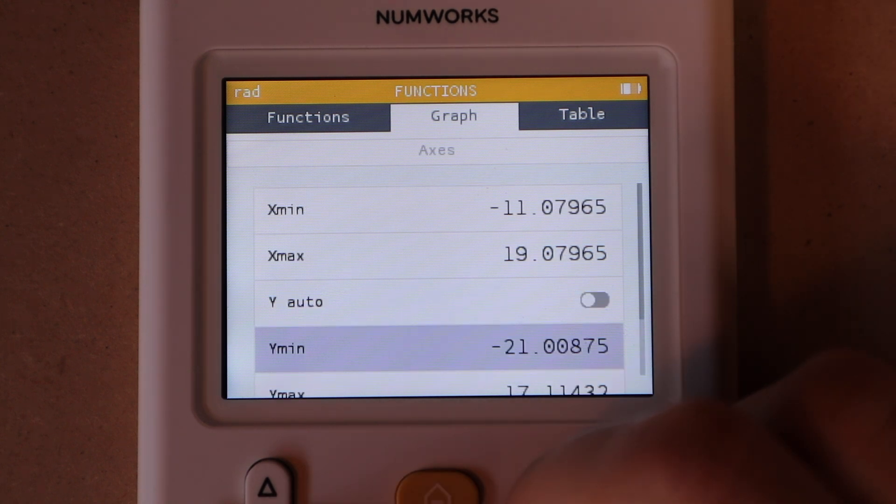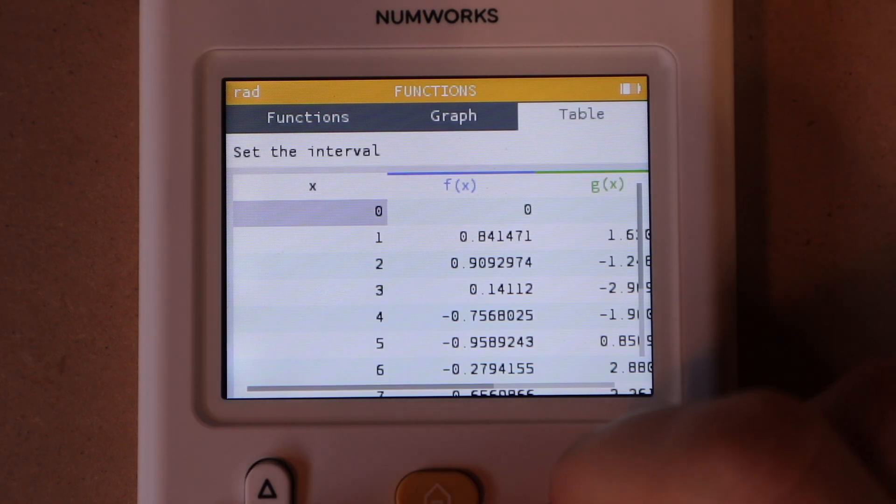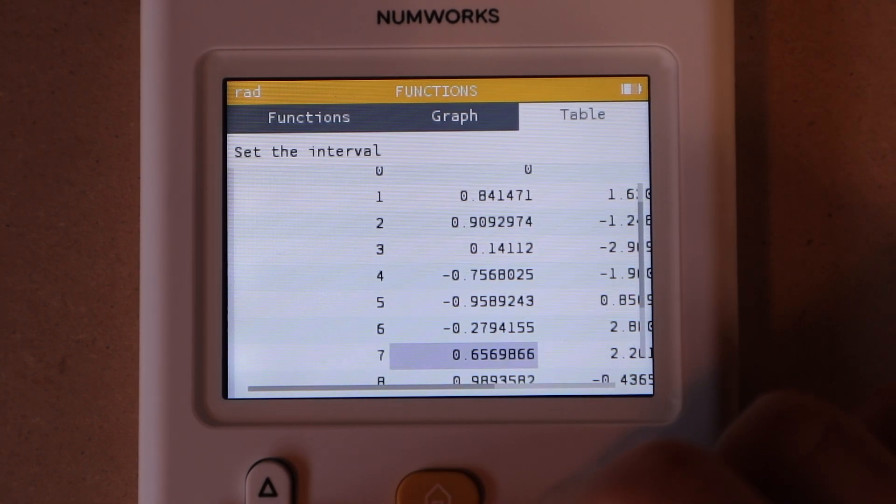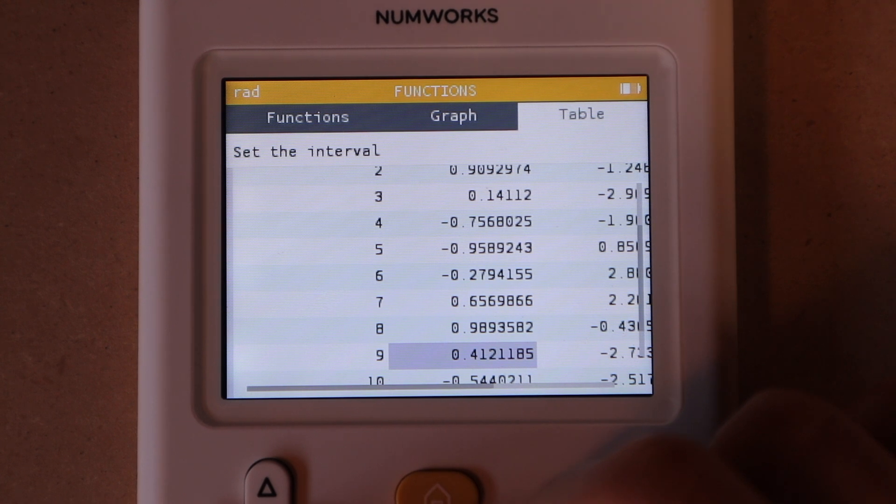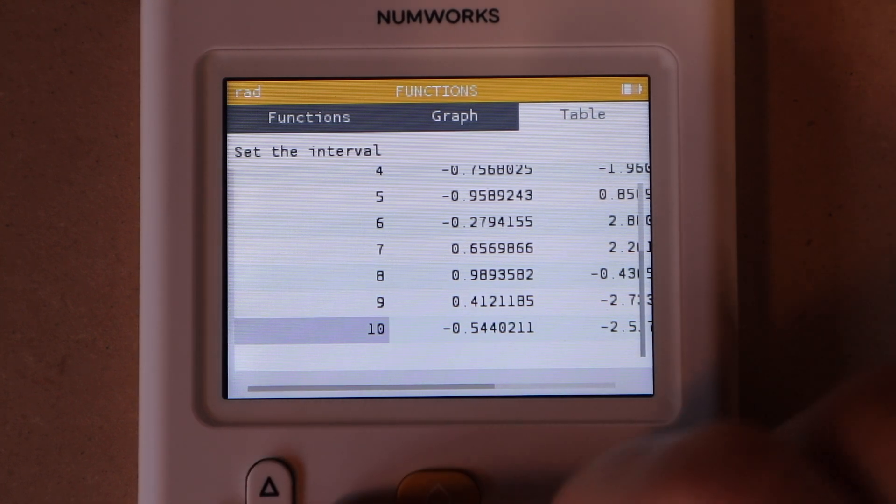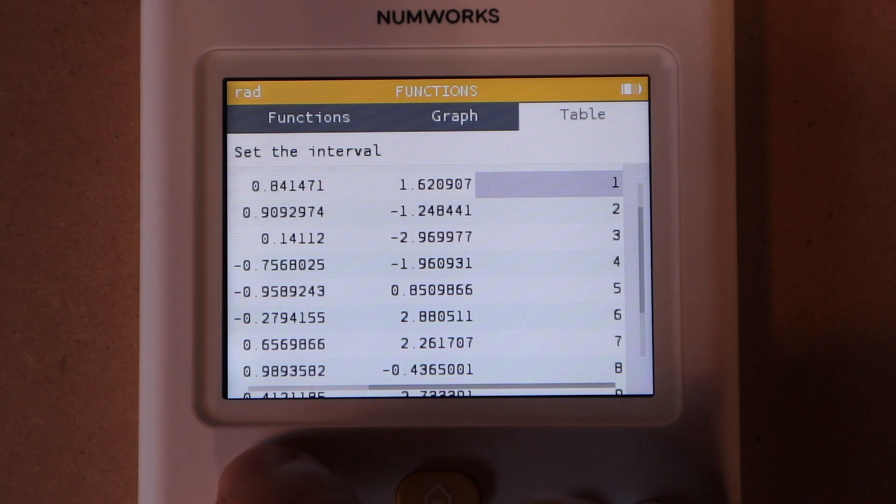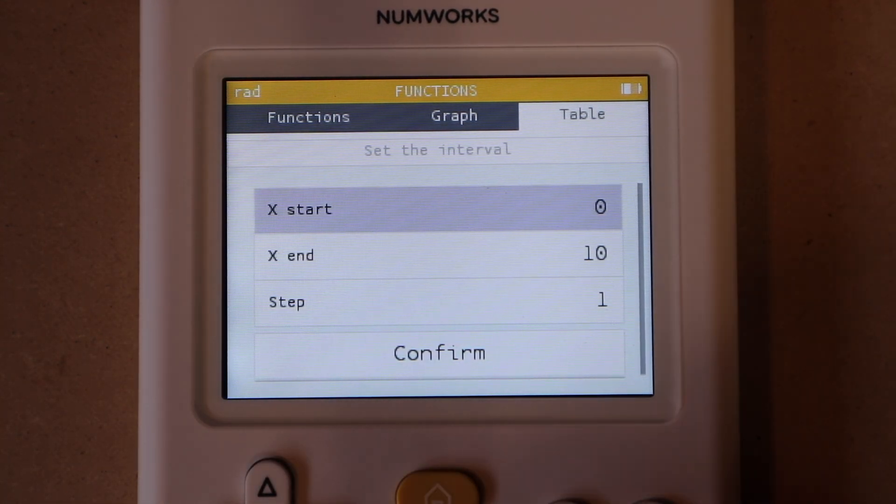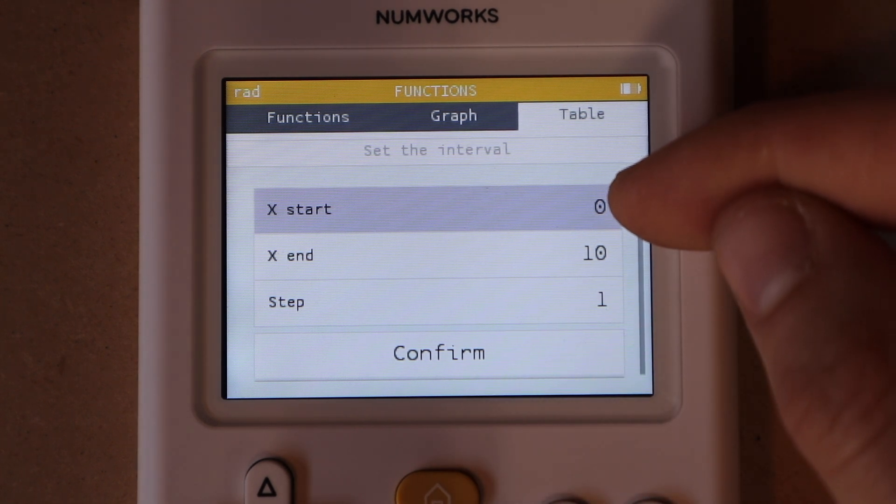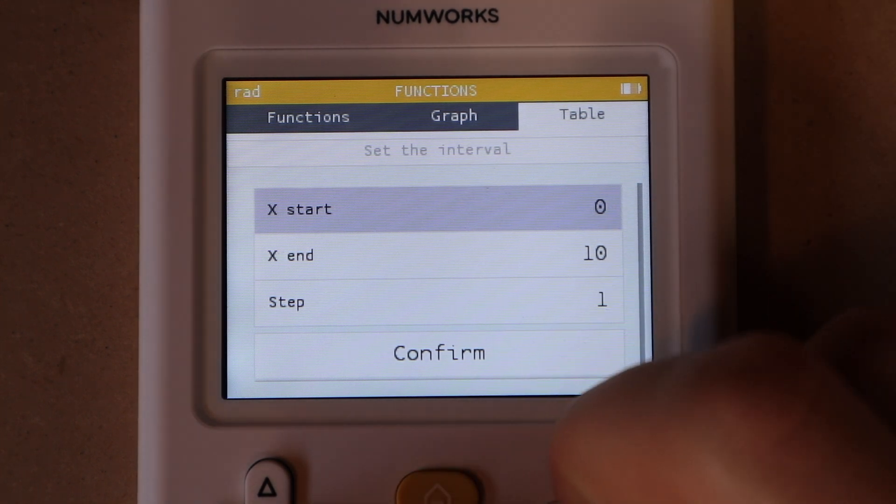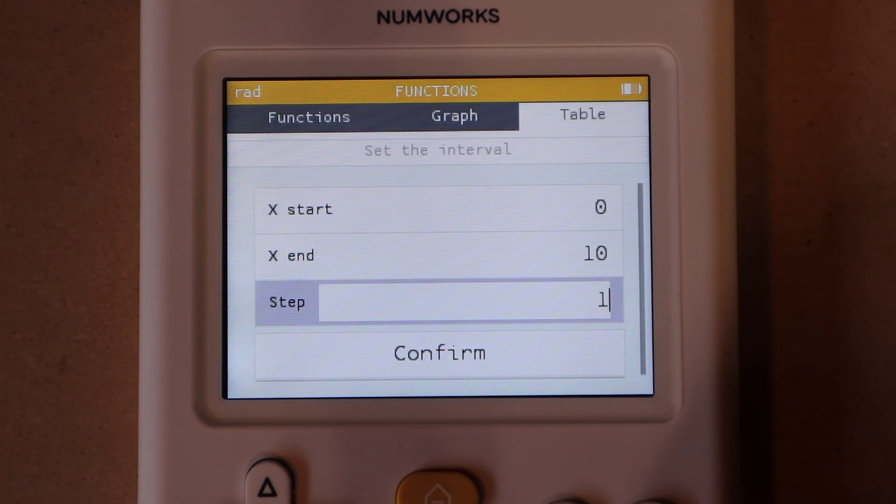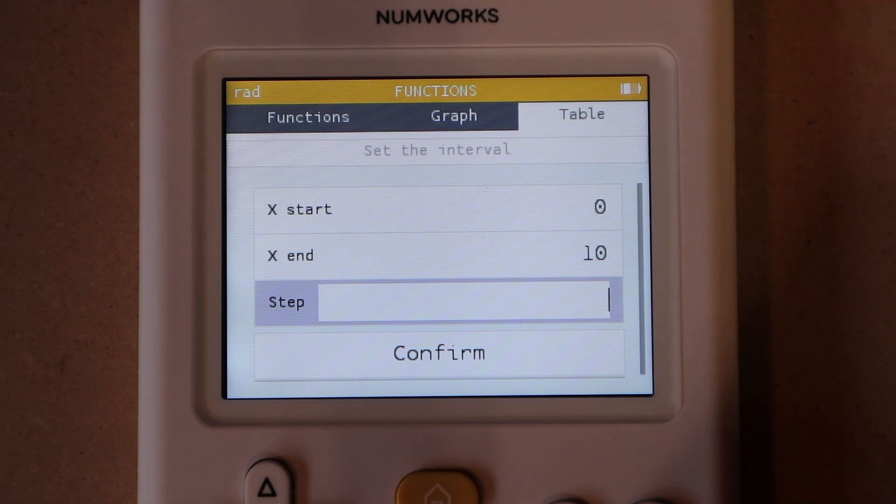Finally there's also a table function over to the right of the graph window. This is pretty simple. It's just a table of x values and then their corresponding y values for the three functions that you enter. You can go to set the interval, and you can set where you want the x values to start and end, and you can also set the step size. So if you want to get a very detailed look at how y changes with x, you can for example set this to 0.01.